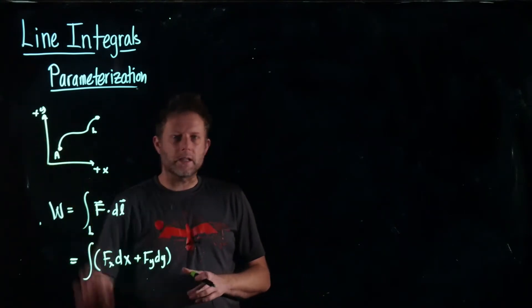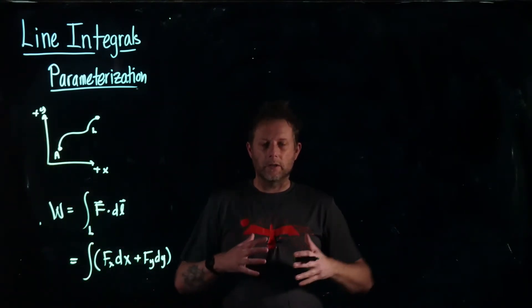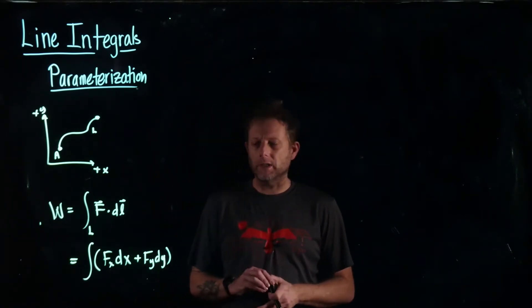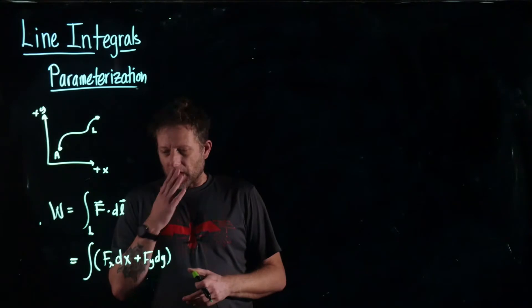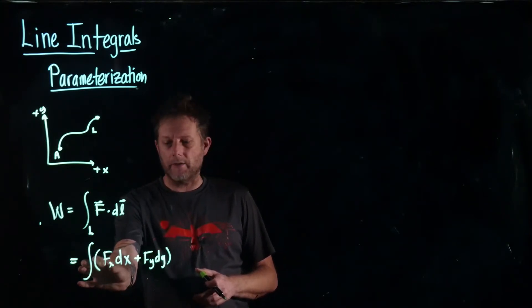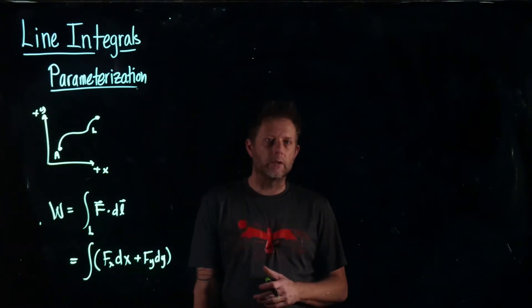So this is our Cartesian system. This is a reference frame we're somewhat comfortable working with from physics one. We'll be using physics two as well. And keep in mind these are components they're not magnitudes so they could be negative. These fx, fy are the components and not the magnitudes.